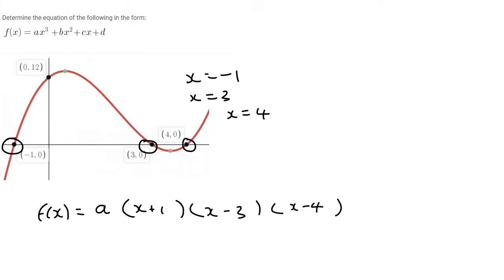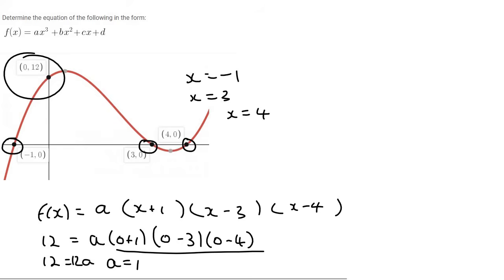Then when you have to find a, you substitute in a random point that you haven't used yet, and that would be this one for example. So you could put the 12 in the y's place, 0 in the x's place. Then these three brackets, just type it all in on your calculator. It's 1 times by minus 3 times by minus 4, that's just going to give you 12, and so we're going to actually end up having 12a, and so a is equal to 1.